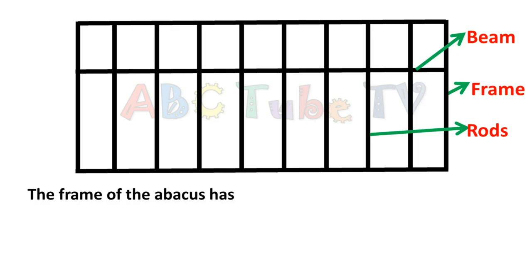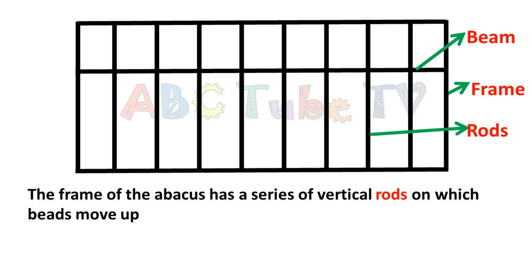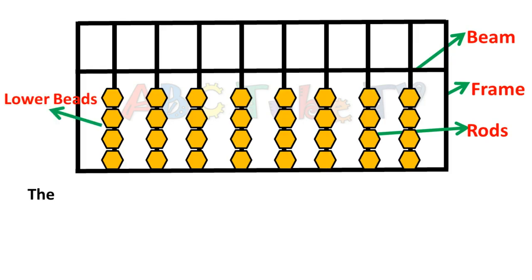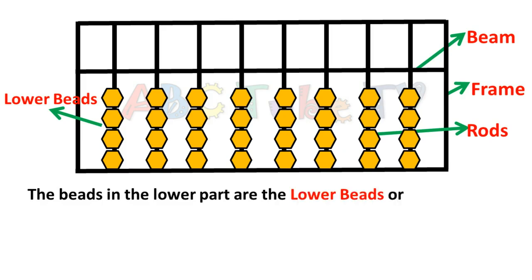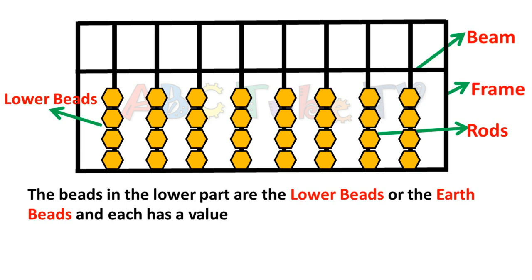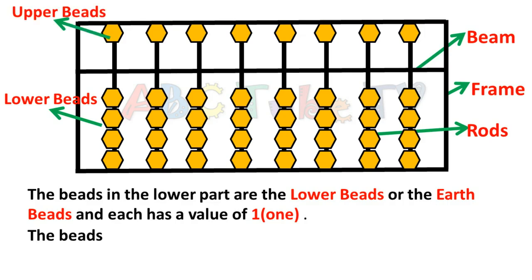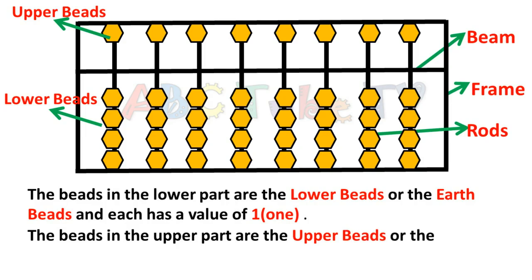The frame of the abacus has a series of vertical rods on which beads move up and down. The beads in the lower part are the lower beads or the earth beads, and each has a value of 1. The beads in the upper part are the upper beads or the heaven beads, and each has a value of 5.